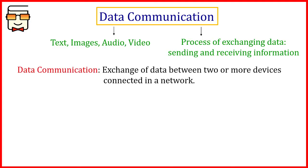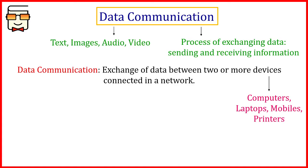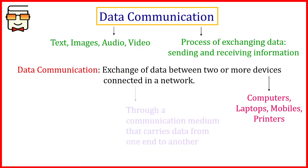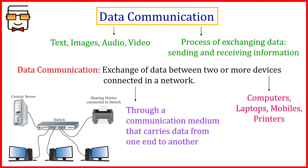When we combine the two words, it forms data communication, which means we are exchanging data between two or more devices that are connected in a network. These devices can be laptops, computers, mobile phones, printers, speakers — any device capable of either sending or receiving data or doing both. When these devices are connected through a wired or wireless transmission medium that is able to transmit data over the network, such interconnected devices form a network.